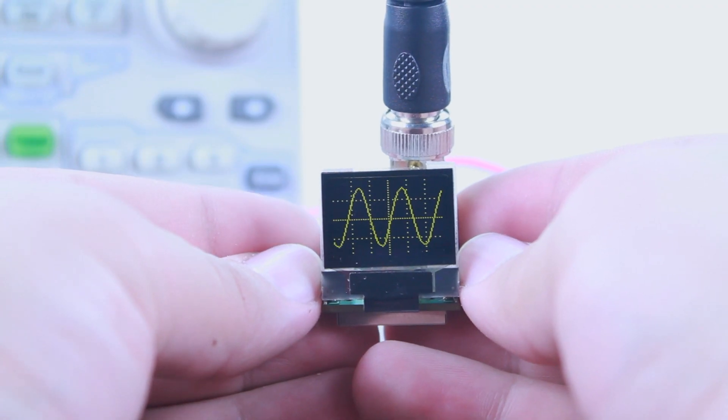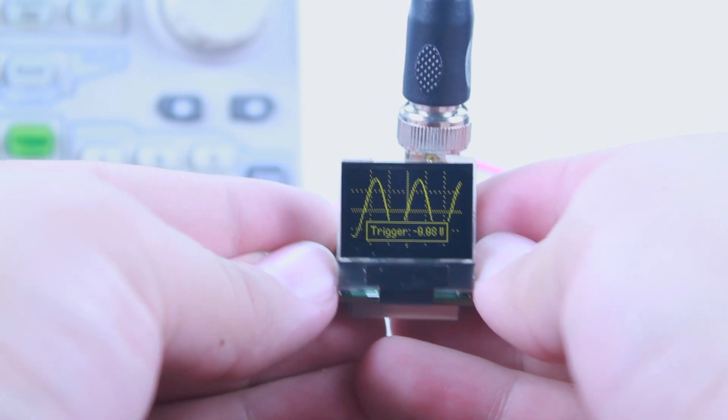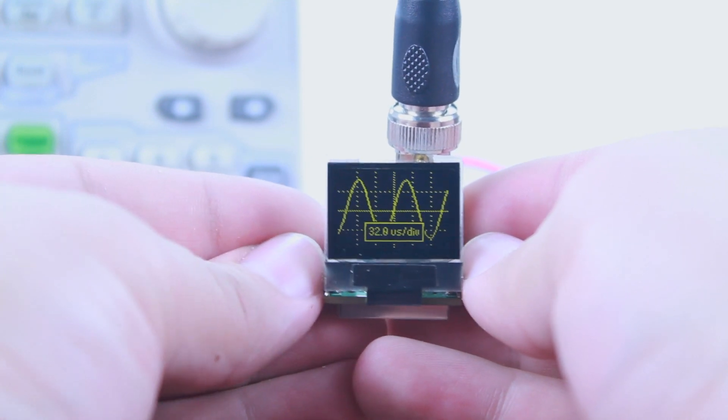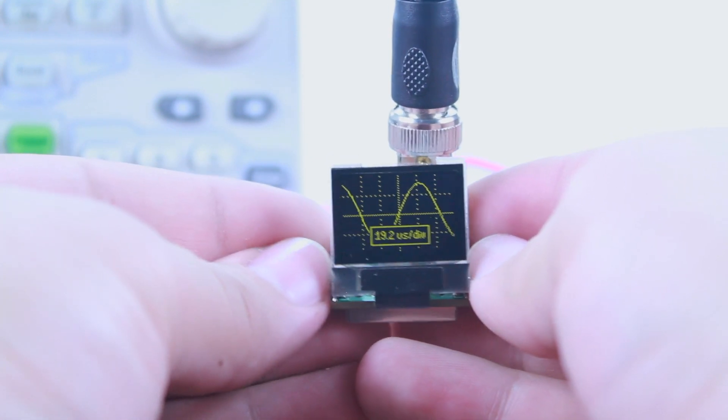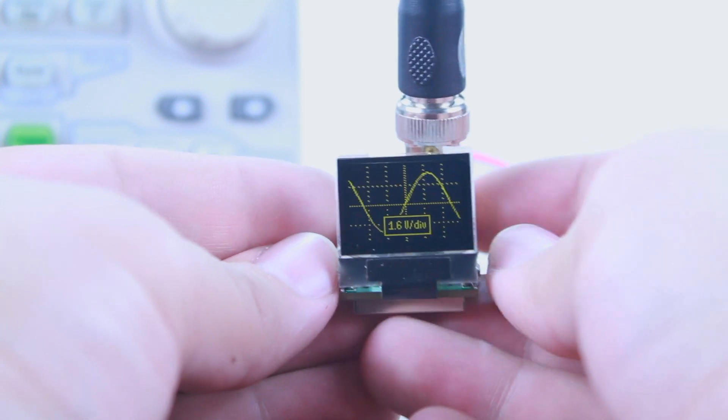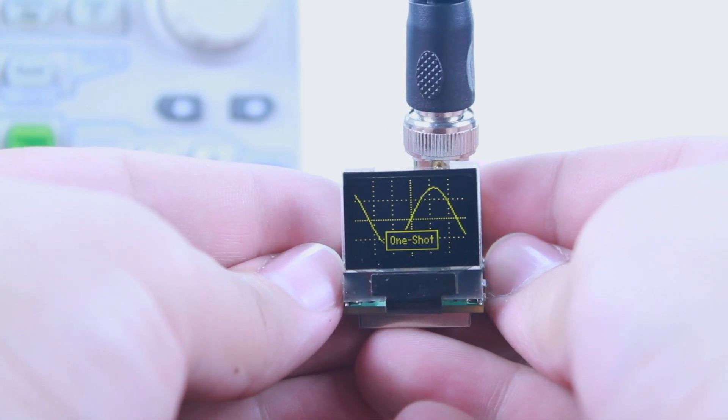The six buttons allow you to set your trigger level, set your time scale, cycle through gain settings, and select between free-running and one-shot modes.